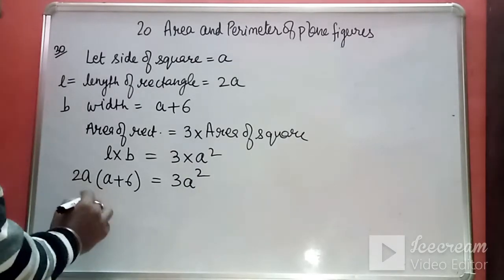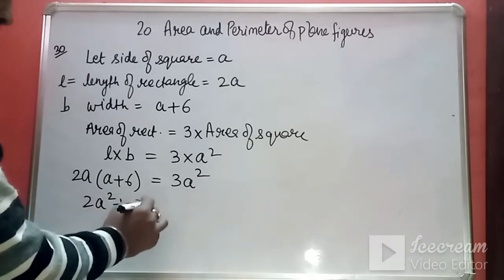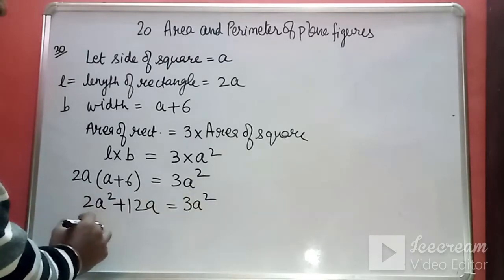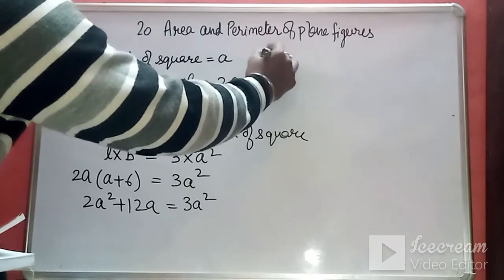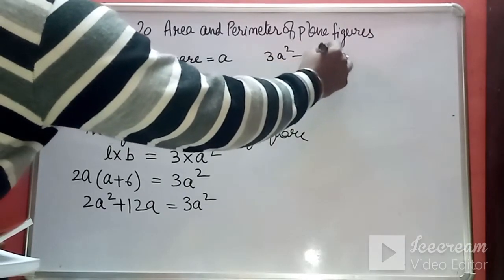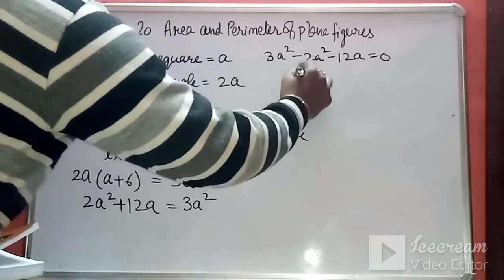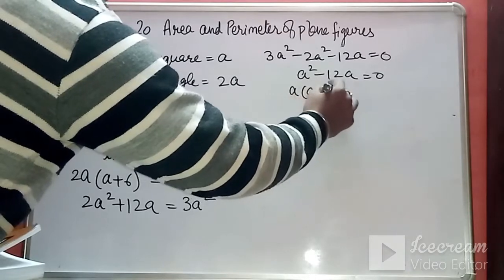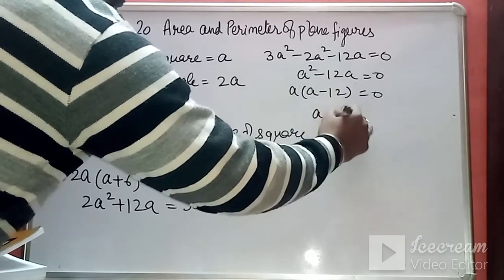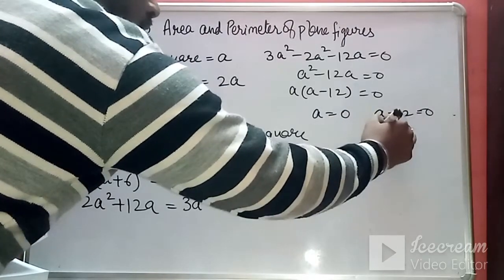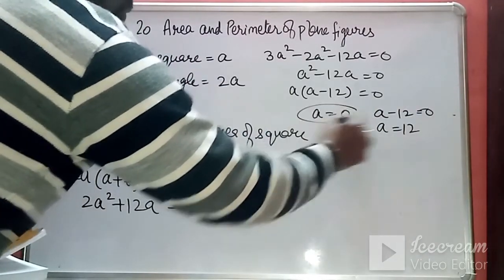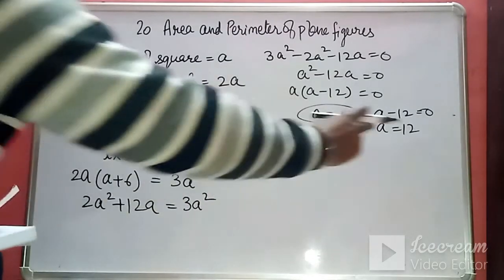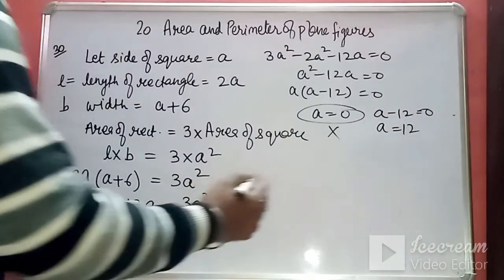Substituting: 2a times (a plus 6) equals 3a squared, giving 2a squared plus 12a equals 3a squared. Rearranging: a squared minus 12a equals 0, so a(a minus 12) equals 0. This gives a equals 0 or a equals 12. Since the side cannot be zero, a equals 12 cm.